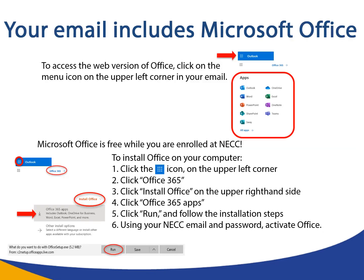Your email includes Microsoft Office. To access the web version of Office, click on the menu icon in the upper left corner of your email. Microsoft Office is free while you are enrolled at NECC. Step 1: click the menu icon in the upper left corner. Step 2: click Office 365. Step 3: click install Office on the upper right-hand side. Step 4: click Office 365 apps. Step 5: click run and follow the installation steps.